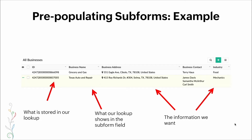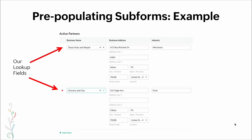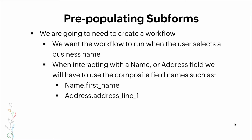What our lookup shows in the subform field is the business name column, and the information we want are the business address and industry fields. Here's how the subform looks: we have two records with a lookup field for business name on the left — as we select the business name, the fields on the right get pre-populated. To make this work, we need a workflow triggered when the user selects the business name. When interacting with a name or address field, we use a composite field name such as name.first_name or address.address_line_one.